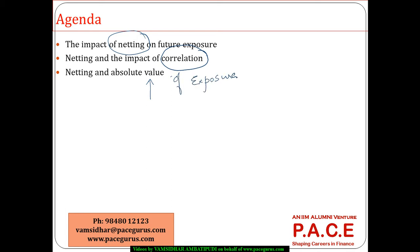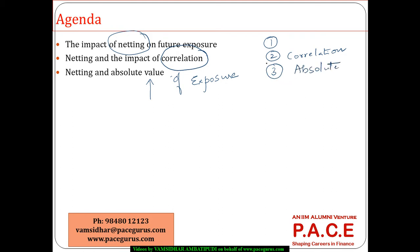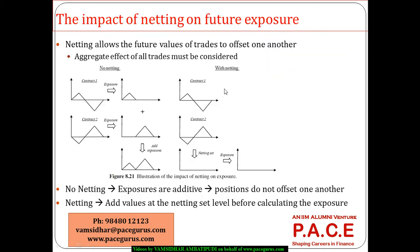Three major topics: one, netting in general; two, correlation between the various exposures — does it play any role in netting; and three, the absolute value of the different exposures — does it play any role in the case of netting?